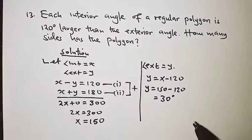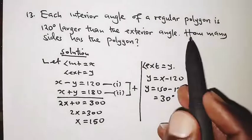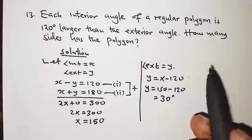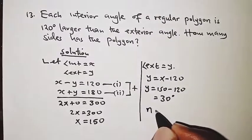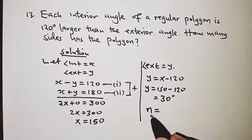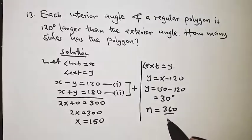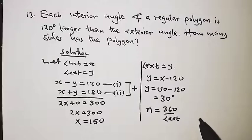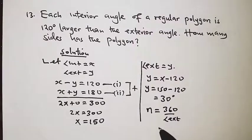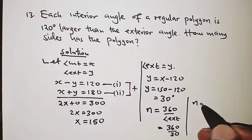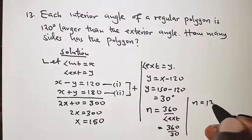So y equals 30 degrees. We can now get the number of sides the polygon has. The number of sides n is given by 360 divided by the exterior angle. So n equals 360 divided by 30, which gives n equals 12 sides.